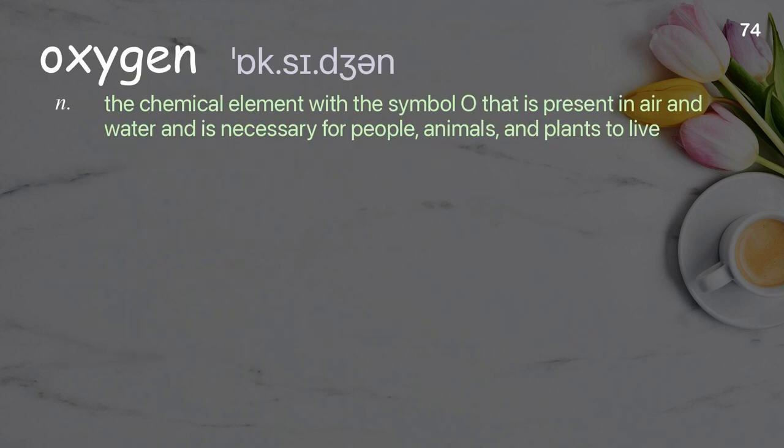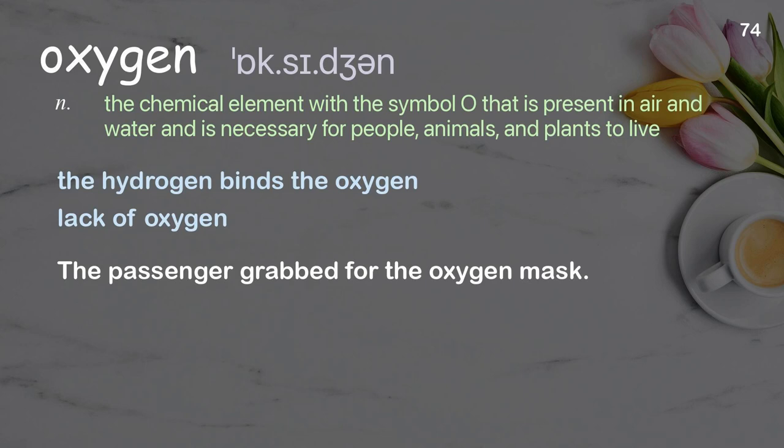Oxygen: the chemical element with the symbol O that is present in air and water and is necessary for people, animals, and plants to live. Examples: the hydrogen binds the oxygen, lack of oxygen. The passenger grabbed for the oxygen mask.